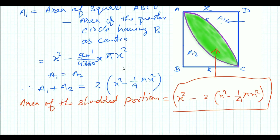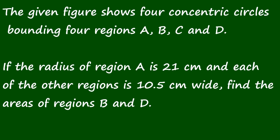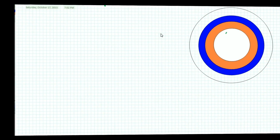Now I will discuss a sum related to concentric circles. The given figure shows four concentric circles bounding four regions A, B, C, and D. If the radius of region A is 21 centimeters and each of the other regions is 10.5 centimeters wide, find the area of regions B and D.